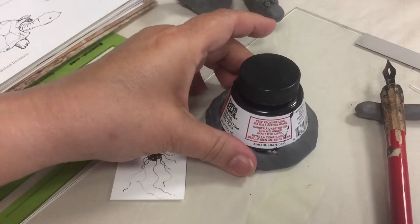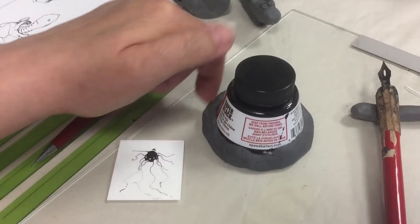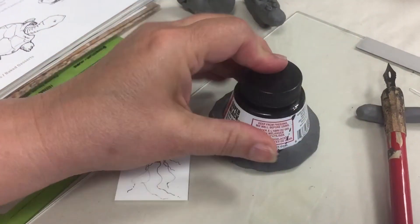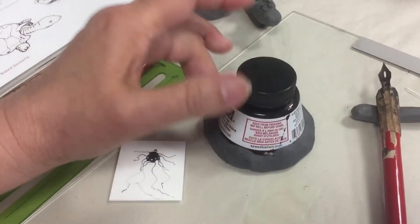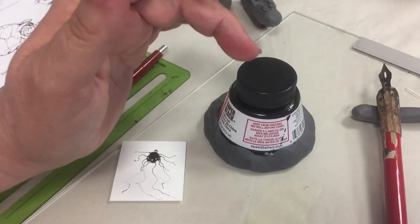Instead of buying an expensive holder for my ink bottle, I wrap a roll of plasticine around the bottom and that is secured enough so that I don't have to worry about any flips or accidental nudges of my ink bottle.